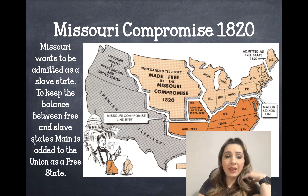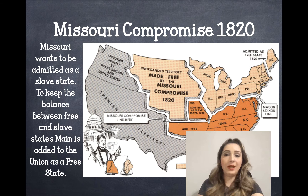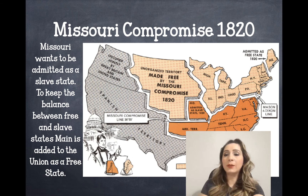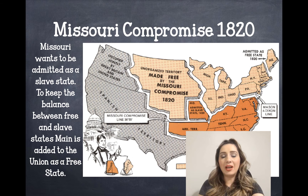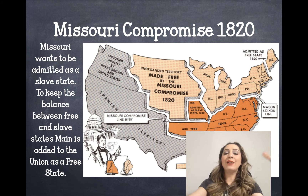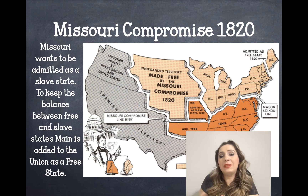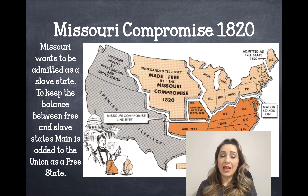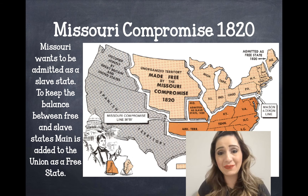They realized that Maine had enough population and met the requirements to be admitted into statehood. So they added Maine as a free state, and now they kept that balance and relieved the sectional tension between the north and the south. This became known as the Missouri Compromise.